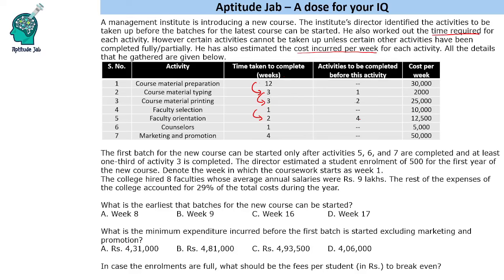Further information is given: the first batch of the new course can be started only after activities 5, 6, and 7 are complete, and at least one third of activity 3 is completed. So we need to complete 5, 6, 7, and one third of activity 3 — basically we need one week of printing material ready to start the course. The director estimated student enrollment of 500 for the first year. Denote the week in which the coursework starts as week 1.